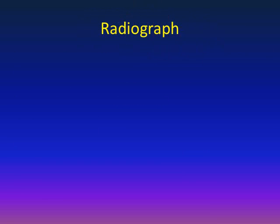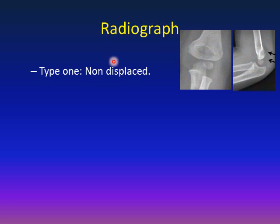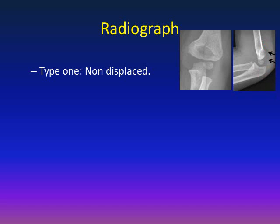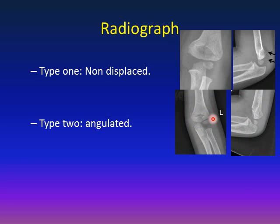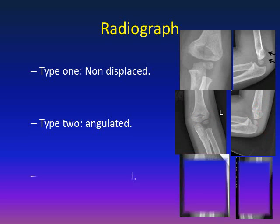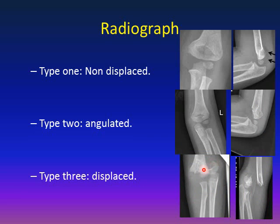Regarding radiographs, there are three types of supracondylar fracture. Type 1 is non-displaced; on the lateral view, you see the posterior fat pad sign — a radiolucency behind the elbow representing blood in the joint. Type 2 is angulated — on the AP view, you see the fracture; on the lateral view, there is angulation. Type 3 is a complete fracture with separation of the fracture ends; the lateral view shows significant displacement.